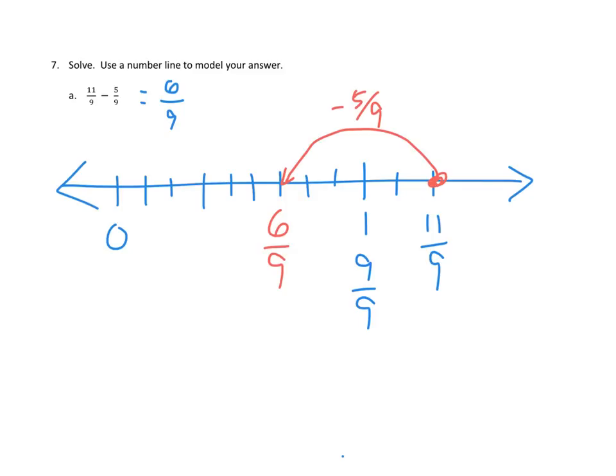And in this case, we weren't working with oranges, we were working with ninths. But the same idea applies, right? We had 11 of them, we gave away 5 of them, we ended up with 6 of them, and that's 6 ninths. And we confirmed it by using our number line to hop out to 11 ninths, and then subtracting back 5 ninths to end up at 6 ninths.